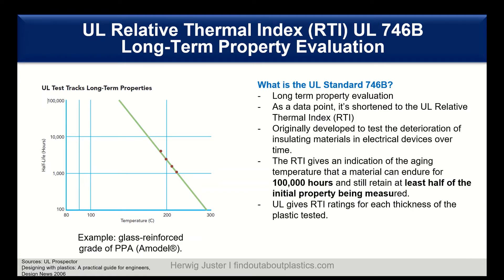So what is the UL standard 746B in detail? It is for long-term property evaluation — as a data point it is shortened to the UL Relative Thermal Index, RTI — and it was originally developed to test the deterioration of insulating materials in electrical devices over time, so mainly for the electrical industry. RTI gives an indication of the aging temperature that the material can endure for 100,000 hours and still retain at least 50%, or half, of the initial property being measured.